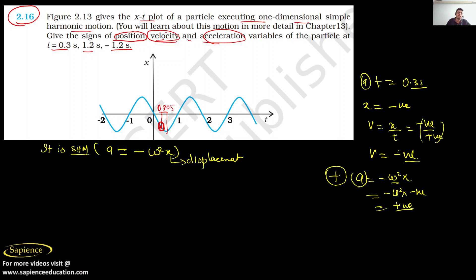Similarly, let us solve case B, where time t = 1.2 seconds. Looking at the graph, this is 1 second and this is 1.2 seconds — we can locate that point. We should be precise. So at t = 1.2 seconds, let us determine the values.